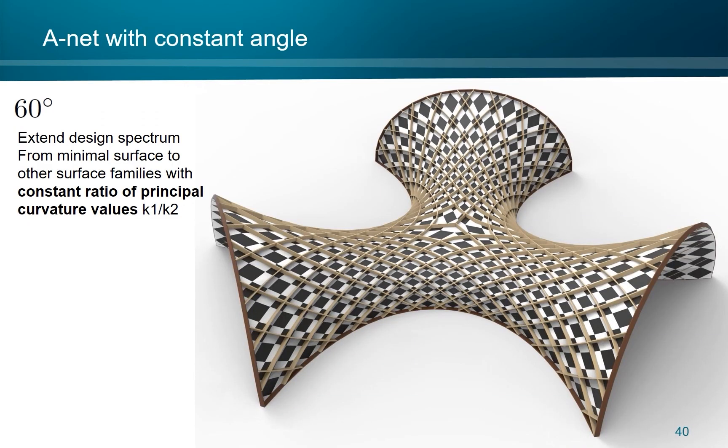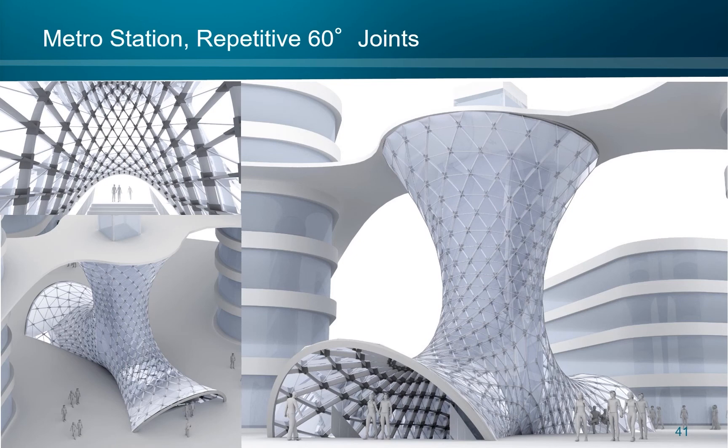So far, we have only looked at constant 90 degree nodes, but the design can be extended to any angular constraint, which extends the design spectrum from only minimal surfaces to all surfaces with a constant ratio of principal curvatures, k1 over k2. We tried to embrace the dynamic nature of these diamonds to design an urban metro station, including elevated facade. This grid shell could be constructed with repetitive cast steel joints. However, the lamellas in between the joints have to accommodate the geodesic curvature and torsion.